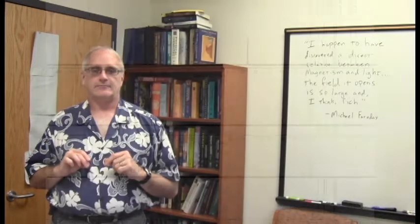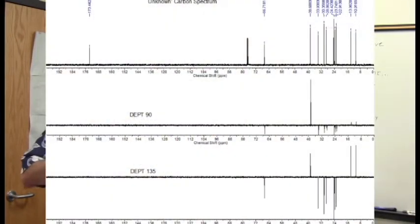The DEPT-90 spectra, you'll notice how almost all of these peaks are either gone or badly truncated. There is only one of them, this one here at around 38 ppm, that is nice and tall in the DEPT-90. Of the 11 carbons that we saw in the original carbon spectrum, we have one methine, 1CH.